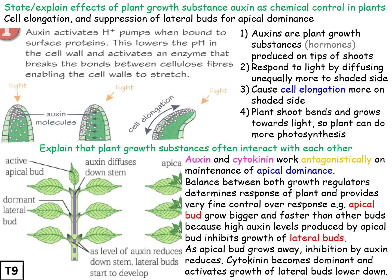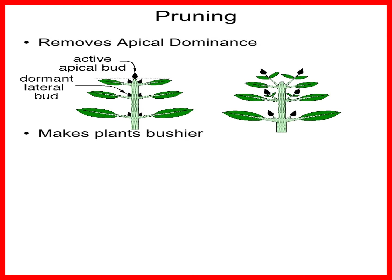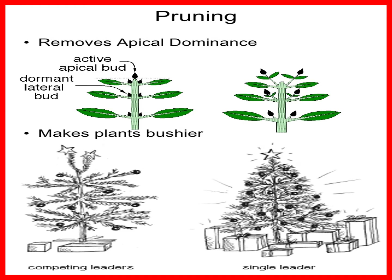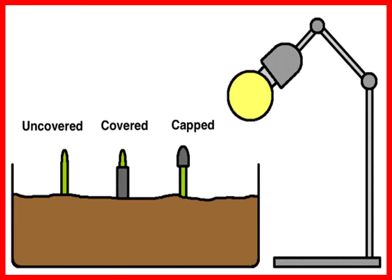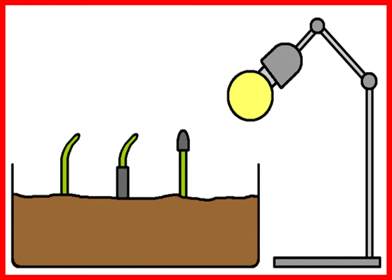A real-life example is pruning, where you remove the active apical bud containing auxins. When removed, auxin no longer inhibits the lateral buds, so cytokinin causes them to start growing, making plants bushier. A good example is Christmas trees, which are bushier because lateral buds have grown after the apical bud was removed.